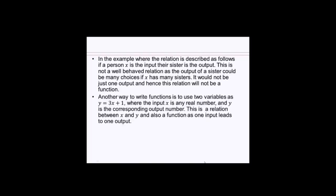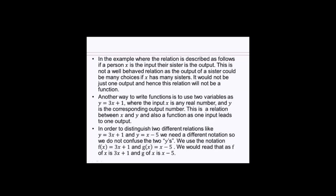Another way sometimes people write functions is using two variables. And by the way, we're only concentrating on functions of one variable for our discussion purposes. y equals 3x plus 1. So the input x is any real number, and y is the corresponding output number. This is a relation between x and y, and in our case, y equals 3x plus 1 happens to be a function. Because for every input, 3 times x plus 1 produces a unique number. In order to distinguish two different relations like y equals 3x plus 1 and y equals x minus 5, we need a different notation so we don't confuse the two y's. And so we will start using the notation f(x).